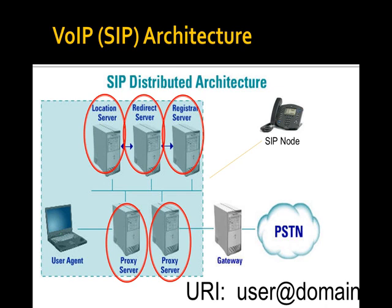Redirect means I send you a call but it needs to go somewhere else — like three-way calling or forwarding your desk number to your cell phone. Location services can talk to the registrar, see where your other location is, and do a redirect dynamically. These three services — registrar, location, and redirect — work together to track user versus network location.